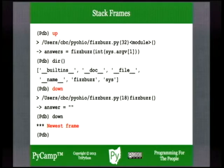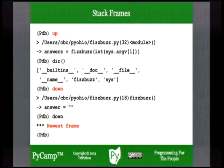The doc string will be different in the outer namespace of the module than the inner namespace of the function. You can go back down into the function namespace with the 'down' debugger command. If you enter it too many times, don't worry — the debugger will simply tell you that you're at the most recent frame. Any questions about moving up and down the stack frame to inspect the state of the program at all the various levels of namespaces in your stack?